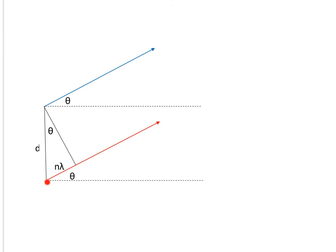We can see that this length — the path difference — is given by nλ, but it's also given by d sinθ from basic trigonometry in the triangle. So the path difference has to be nλ, and from the triangle it must be d sinθ, giving us our diffraction grating equation: d sinθ = nλ.